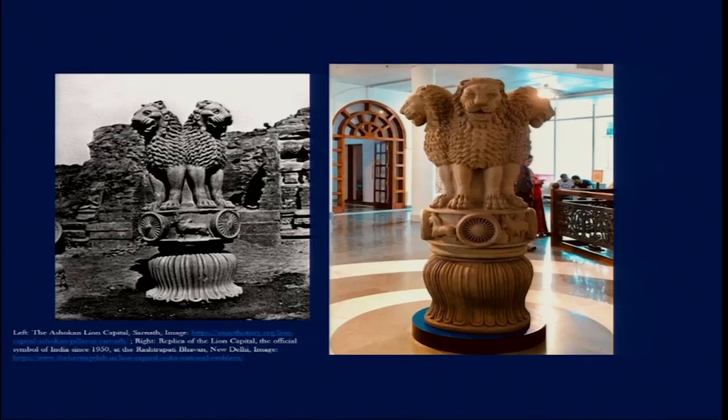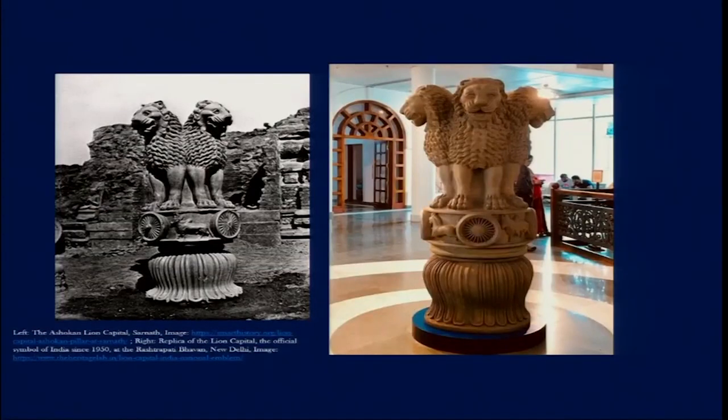Ashoka's embracing of Buddhism and the righteous path, and the spread of dhamma in all directions, made a huge impact in understanding the workings of a republic country such as India. This capital, made in the 3rd century BC — around 2300 years ago — still holds much relevance in our understanding of a nation and the righteous path of behaviour. Ashoka's contribution to building these structures and spreading Buddhism cannot be denied even today.